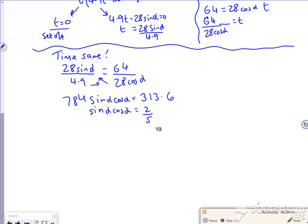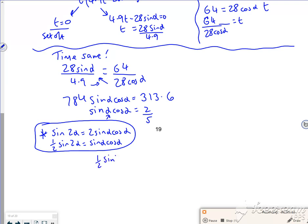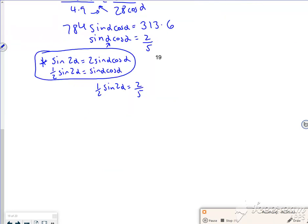Now that nicely works out, doesn't it? But I know that sine 2 alpha is 2 sine alpha cos alpha. So a half of sine 2 alpha is sine alpha cos alpha, and I'm going to use that. I'm going to replace this here, so that's a half sine 2 alpha is two-fifths, so sine 2 alpha is 4 over 5.